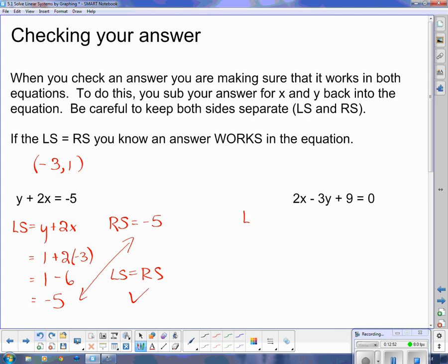Now on the other side, my left side, I've got everything on the left side here. I have 2x minus 3y plus 9. And again, I found out that my x is negative 3. I found out my y is 1. And now 2 times negative 3, right here, is negative 6. And negative 3 times 1 is negative 3. And then I have plus 9.